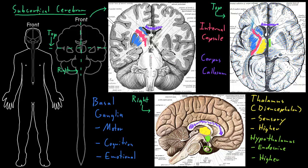I'll stop here, because I just want to introduce these structures that are deep down in the cerebrum — which we call subcortical — so that you can see where they stand in relation to the cerebral cortex on the outside of the cerebrum and the brain stem below the cerebrum.